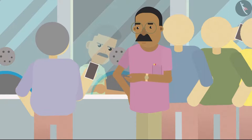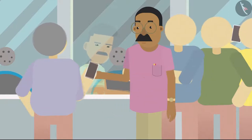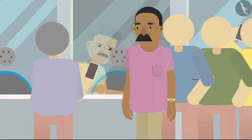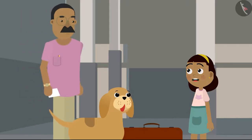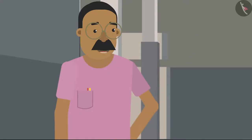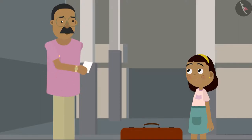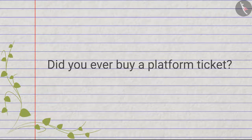Upon reaching the station, Zia's father bought one platform ticket from the ticket counter. Dad, whose ticket is this? Are you coming with us? No Zia, those who do not travel on the train also have to buy a ticket to enter the station. This is called a platform ticket. Do you know what a platform ticket is? Did you ever buy a platform ticket?